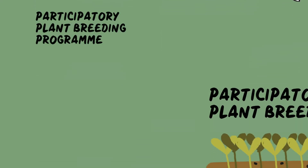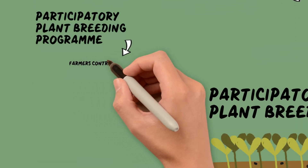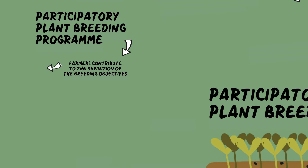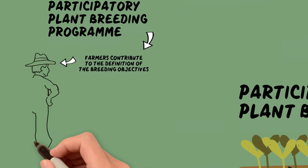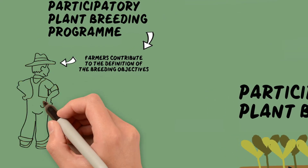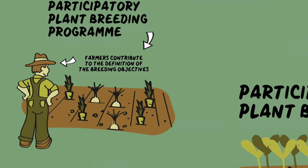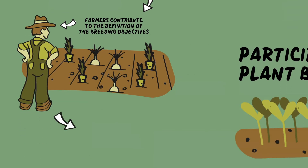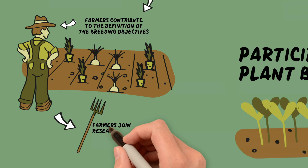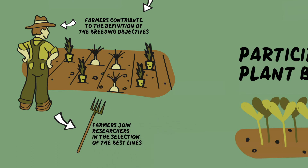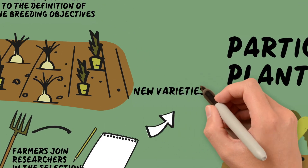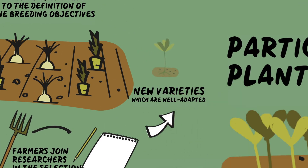In contrast, in a participatory plant breeding program, farmers contribute to the definition of the breeding objectives. Once crosses have been made, the newly generated varieties are grown in farmers' fields, where farmers join researchers in the selection of the best lines. This allows the needs of the farmers to be addressed, creating new varieties which are well adapted to their specific environments and agricultural practices.